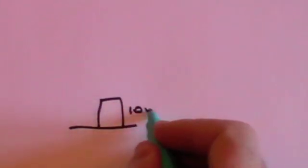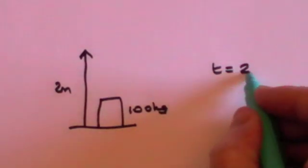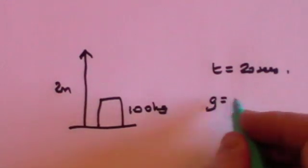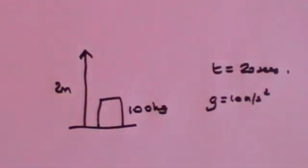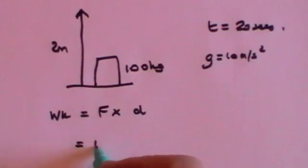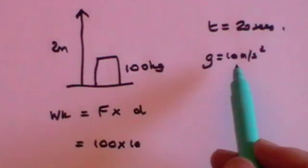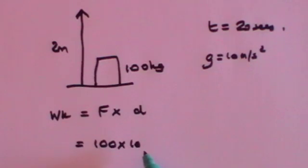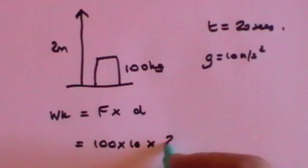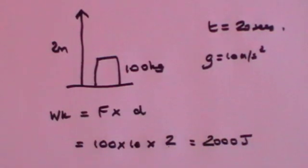Here's another one. I want to lift a mass of 100 kilograms through a height of 2 meters, and I do so in 20 seconds. G is 10 meters per second squared, and I want to know what is the power. Well, the first thing you need to do is work out how much work you have to do. Work is force times distance, and that's going to be 100 times 10, because the force is the weight, which is mass times g, times the distance, which is 2. And that comes to 2,000 joules.